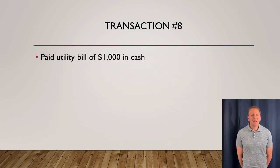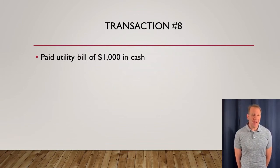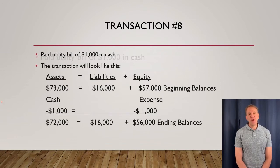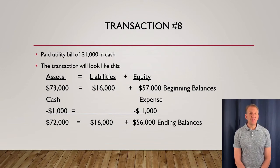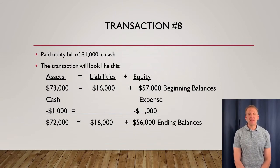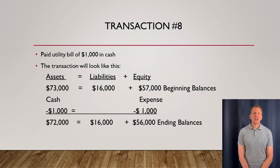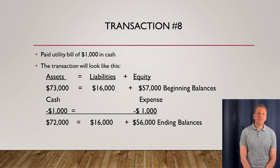In transaction eight, we're paying our utility bill for $1,000 in cash, so cash goes down $1,000. We have a utility expense account — that's an expense, which is part of equity, and it reduces equity. Since we're paying a bill, that reduces the equity balance of the owners, so this expense is a negative dollar amount in this transaction. Our total assets are now $72,000, liabilities are $16,000, and equity is $56,000.